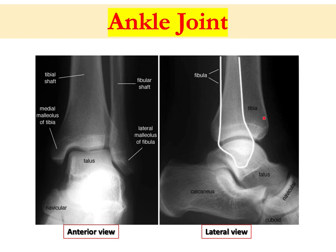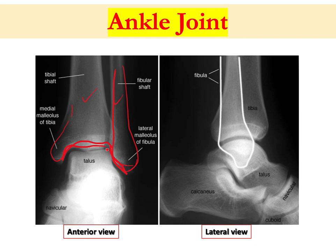Here is a view of the ankle joint. You can see the tibia and fibula. The tibia ends inferiorly at the medial malleolus — a very important bony landmark you can touch and feel. Laterally, we also have the lateral malleolus, which is part of the fibula. Both the tibia and fibula articulate with the talus.